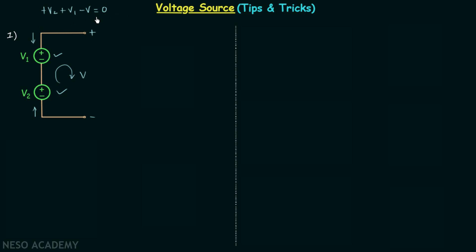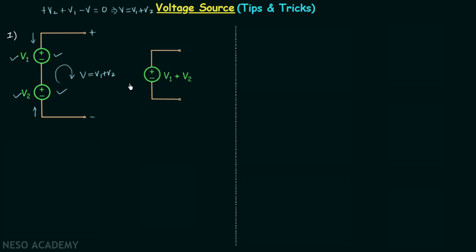From KVL we can calculate V: V equals V1 plus V2. So V1 plus V2 is the voltage across the two terminals. Therefore there is no need for two separate sources providing V1 and V2 — we can use a single voltage source providing V1 plus V2 with polarity plus-minus.